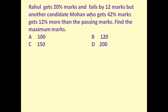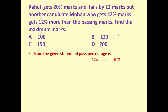Mohan gets 42 percent marks and gets 12 percent more than the passing marks. That means the pass percentage is 42 minus 12, which is 30 percent. So 30 percent are the passing marks, because Mohan gets 42 percent and gets 12 percent more than the passing marks.